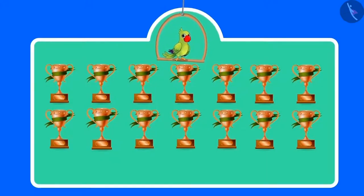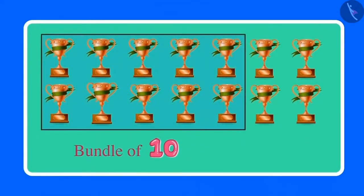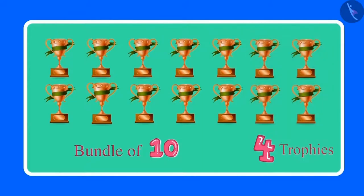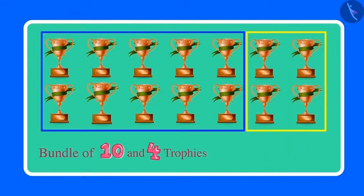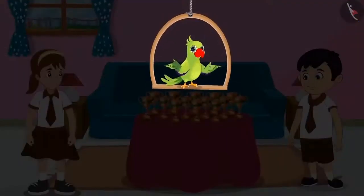So children, can you tell me how many trophies does Chotu have? Come on, let us count together. These are 10 trophies and we can make one bundle of 10 trophies. Apart from this, there are 4 more trophies. This means that Chotu has one bundle of 10 and 4 more trophies, that is 14 trophies in total. Even you had the same answer, right? Very good.